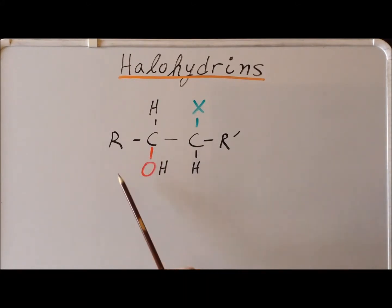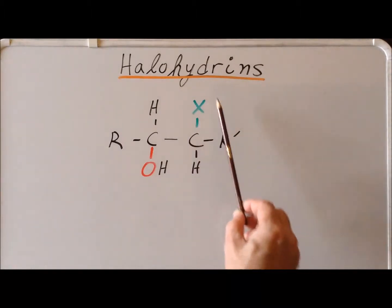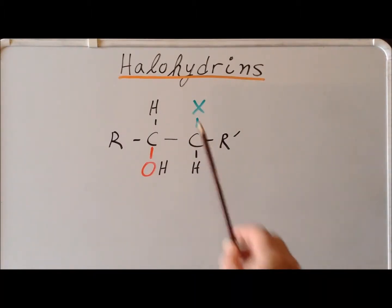Halohydrins are a class of compounds which combine two functionalities. One of them is an alcohol group, the OH. The second is a halide, being either chlorine or bromine. So we have a compound that is both an alcohol and an alkyl halide, a haloalkane. More importantly, these two functionalities are on neighboring carbon atoms in the compound.